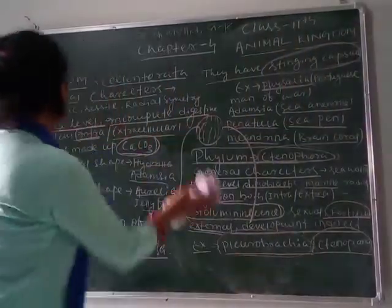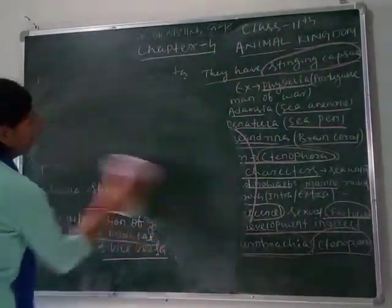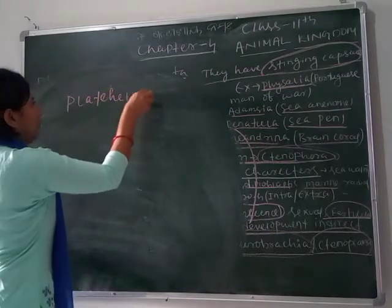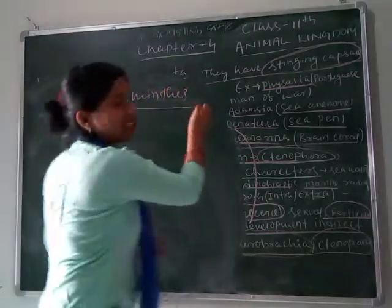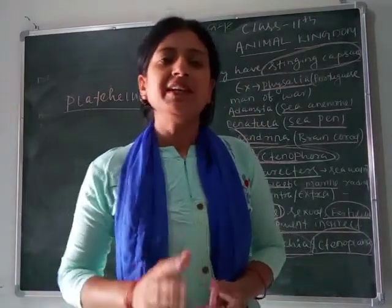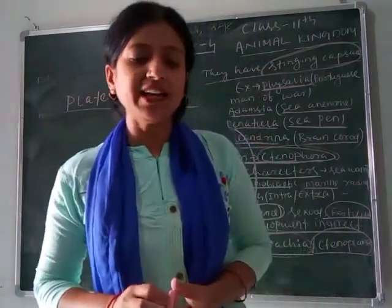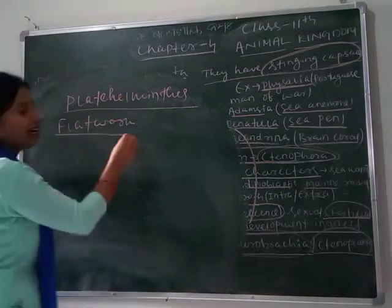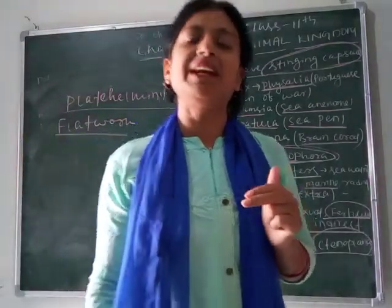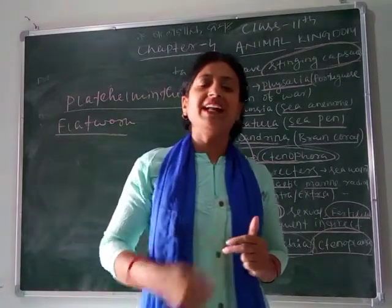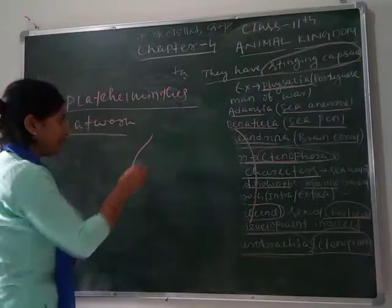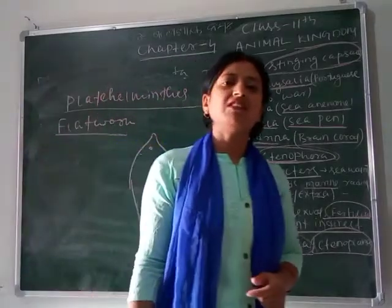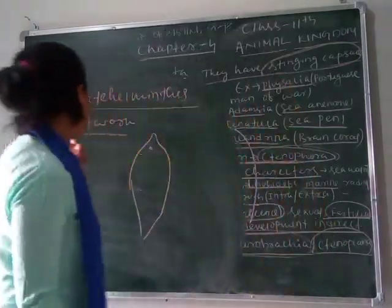The next phylum is Platyhelminthes. Its general characters: the body is diploblastic and bilaterally symmetrical. They are called flatworms and are dorsoventrally flattened — the ventral side is the lower side and the dorsal side is the upper side. Planaria belongs to this phylum. Many species are endoparasites.